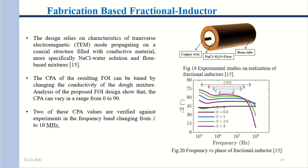For fabrication-based fractional inductors, the transverse electromagnetic method is used, where a copper wire is inserted in a brass tube and the area is covered with a highly conducting liquid. Three vectors arise — the electric vector, the magnetic vector, and the displacement vector — which produce a square root of jω response, yielding a fractional inductor of order 0.5.